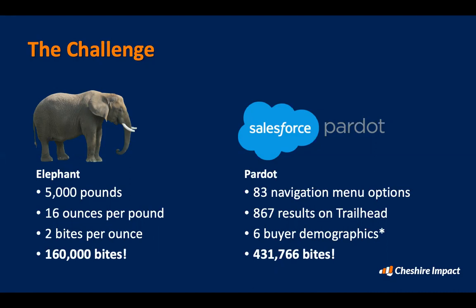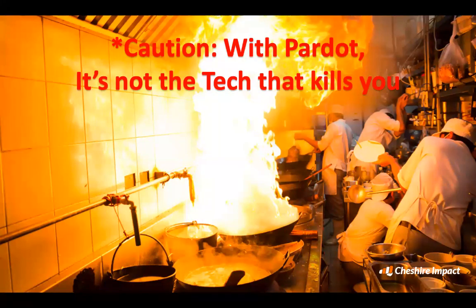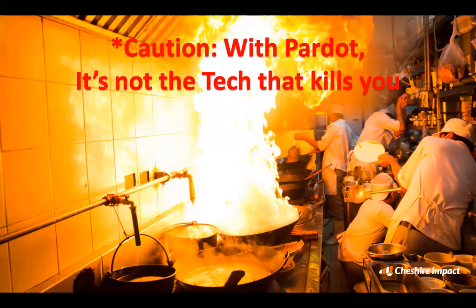Compared to Pardot — there are navigational menus, lots of results on Trailhead, and multiple buyer demographics you're trying to address. There are even more bites than an elephant. So that's the challenge we're addressing today. It's not the tech that kills you in Pardot — it's the strategy. What do I do? Routinely we can teach you and get you up to speed in Pardot very quickly. The question is knowing what to do: now that you know how to build an email, what are you going to send? You know how to do drips — what are you going to have it do?